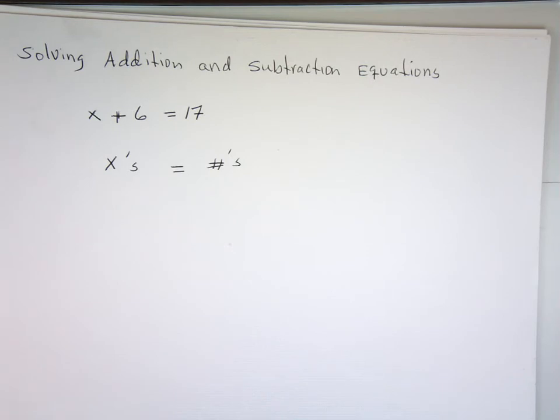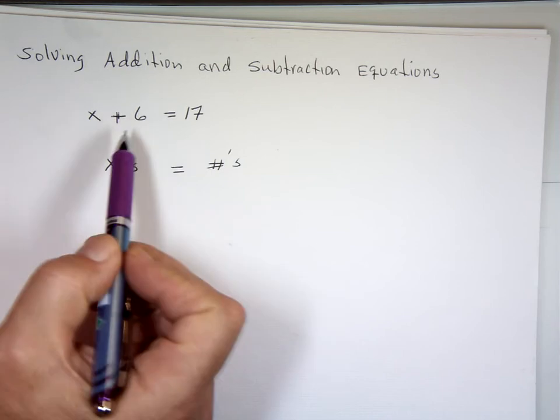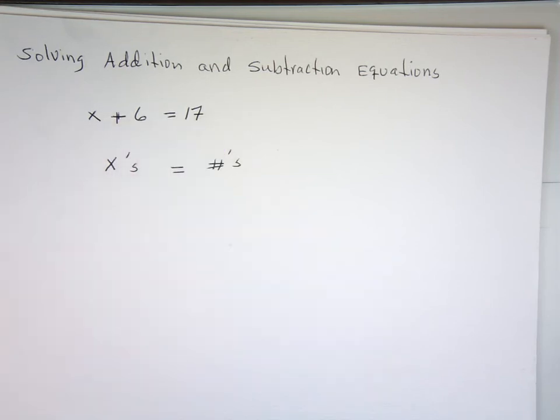To make sure the x's on one side, the numbers on the other side, you can see here, if that 6 was on that side, that would be in good shape.